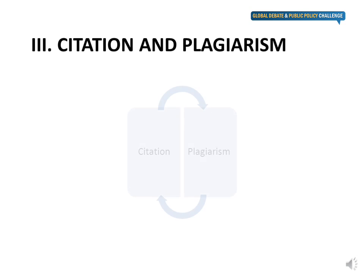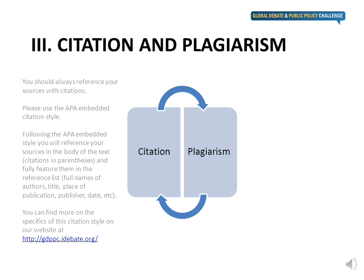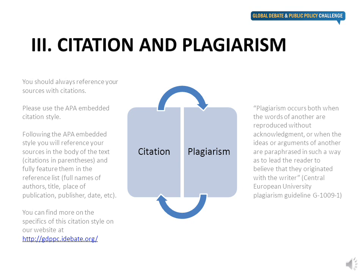Citation and plagiarism oftentimes cause much confusion and questions. It is not difficult, though, if you follow the advice below. First of all, reference your sources. When you find a good report or newspaper article, cite it. When you find the argument of someone else compelling, show that it is not your thought and cite the source. Use the APA embedded citation — it is quite simple. You provide shortened information on the sources in parentheses in the text and give the full reference with all required details in the reference list at the end of your memo. Go to our website to find out more about the APA citation. It is important to cite properly because using the writings and thoughts of others without referencing them is considered plagiarism. The judges will review your memo for plagiarism.